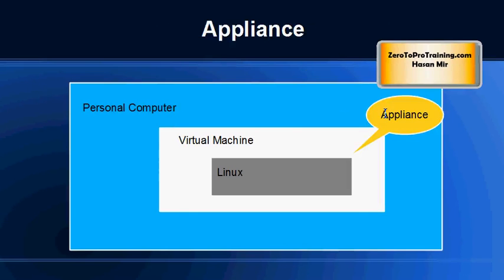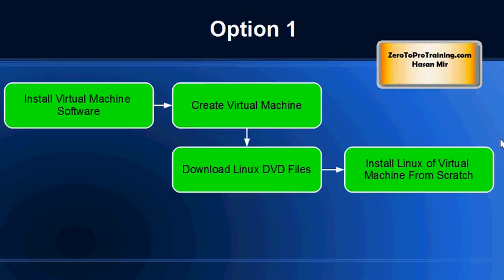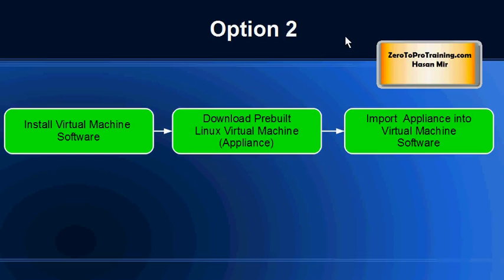This way the operating system of your personal computer is out of the equation. Once you have installed the virtual machine software, you have two options. Option one: after installation of the virtual machine software, you create a new virtual machine, download Linux DVD files with a .ISO extension, attach those files to the virtual machine, and do the installation as if you're doing it on a brand new physical computer. The virtual machine will behave just like a new computer.